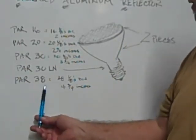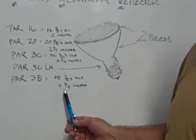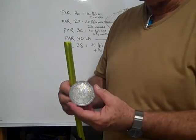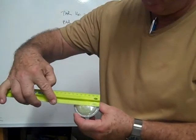Now the PAR 38 is 38 eighths of an inch in diameter across the face of the bulb. That's equal to 4 and 3 quarter inches. This is a PAR 20 halogen flood. It measures 20 eighths of an inch across the flood.